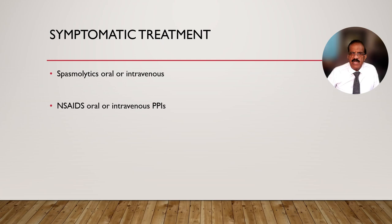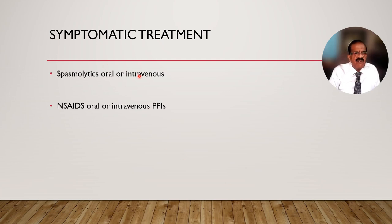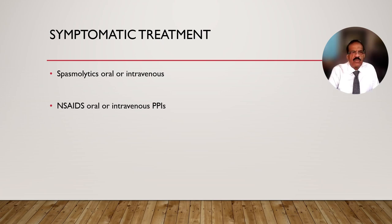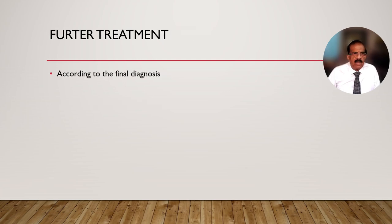Symptomatic treatment of epigastric pain: spasmolytics oral or intravenous depending on severity. If pain is severe, give intravenous spasmolytics because oral preparations take a long time to start working. Non-steroidal anti-inflammatory drugs can also be given orally or intravenously, and proton pump inhibitors can also be given intravenously. These are the drugs used to relieve the patient's symptoms; after investigation, treatment can be optimized accordingly. Final treatment will be according to the final diagnosis.